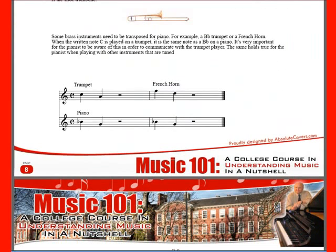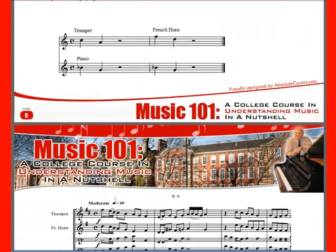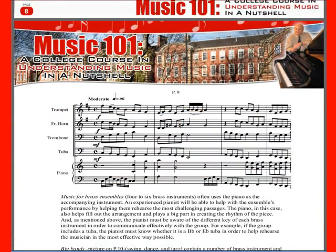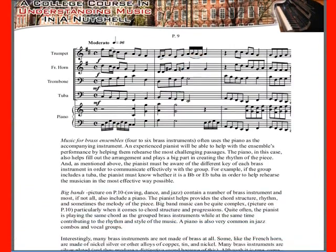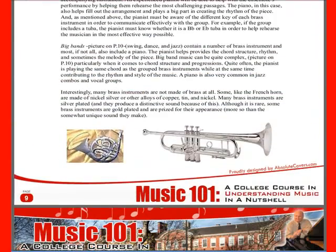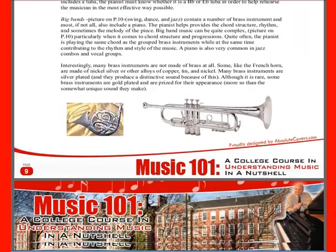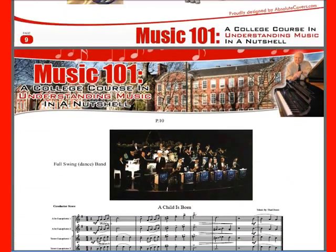If he plays a B flat — your B flat on the piano — it's going to sound like a C. And so this explains how brass instruments are transposing instruments, and what you need to know about that.